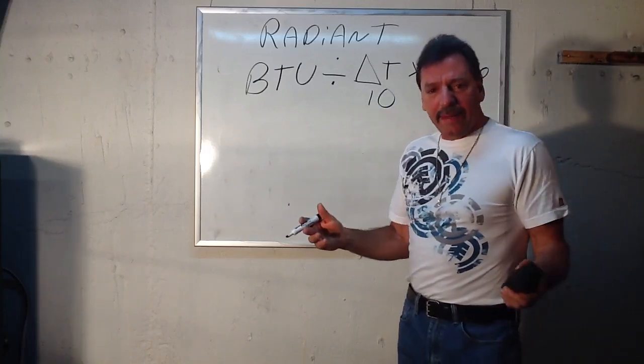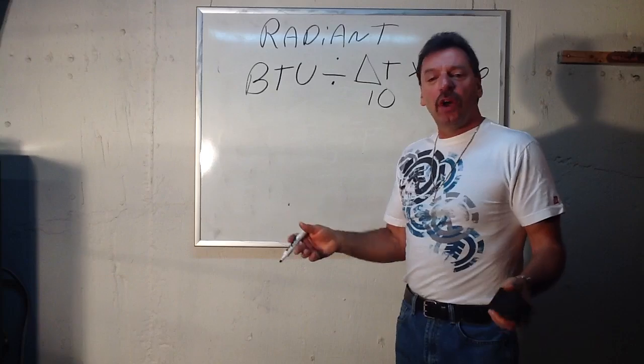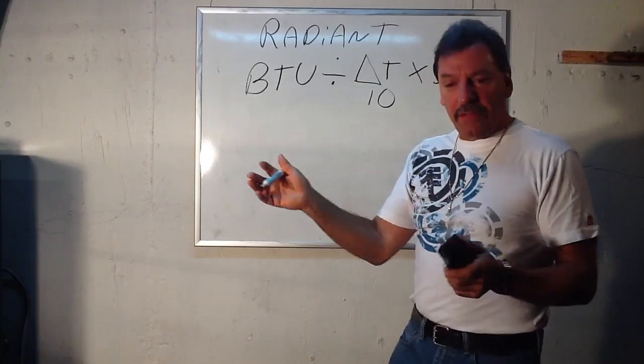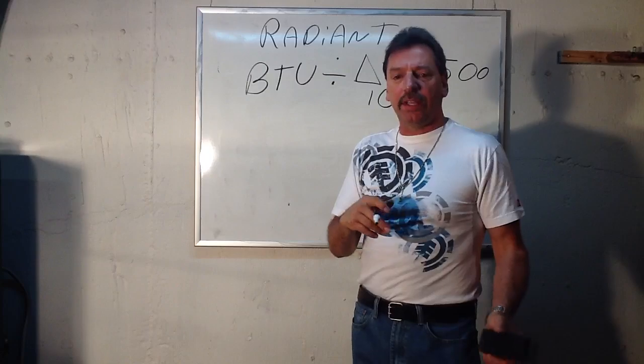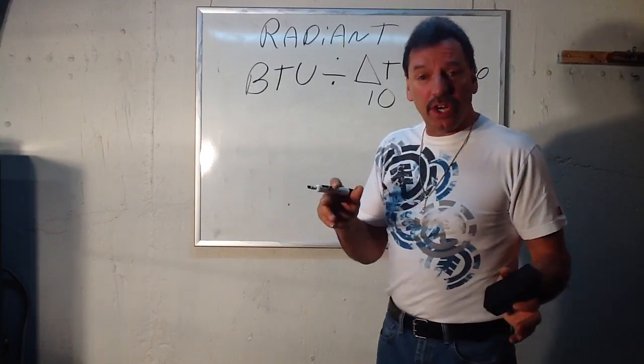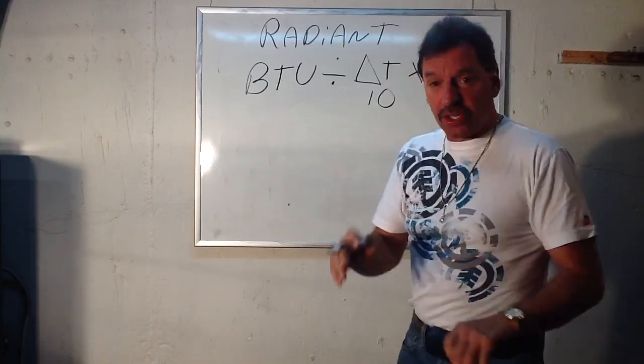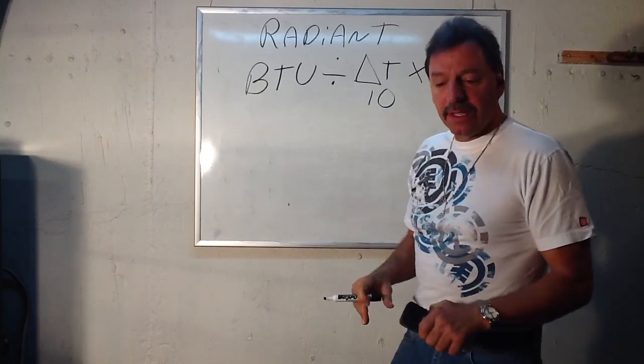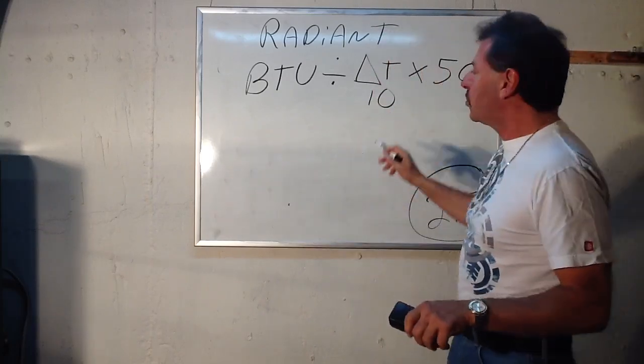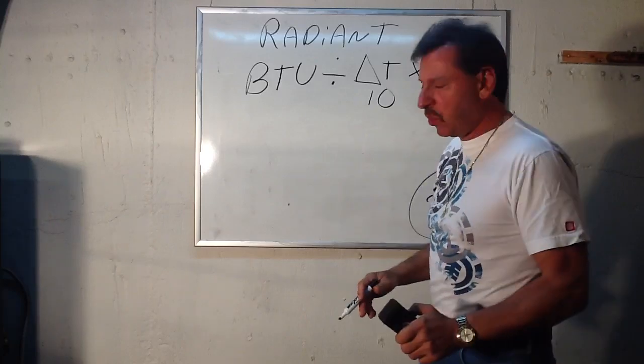Normally on baseboard it's 20, on radiant heat it's normally 10. If you use a different number because you raise the radiant heat higher, you got a fast moving circulator, whatever that water is returning at, there is going to be a difference because it's going to cool. That's the number you would use. Okay, so the Delta T is the difference: with radiant heat it's usually 10, baseboard it's usually 20.